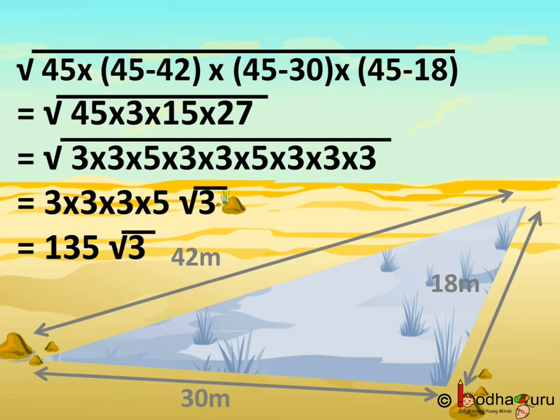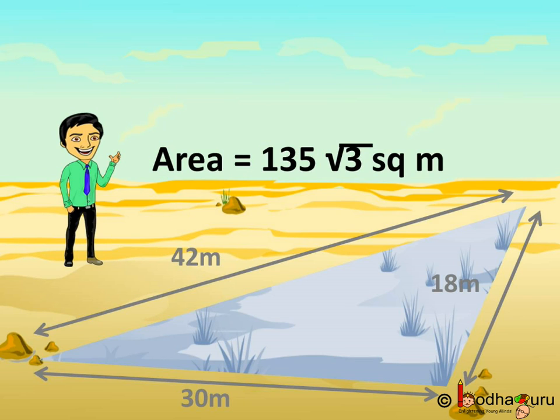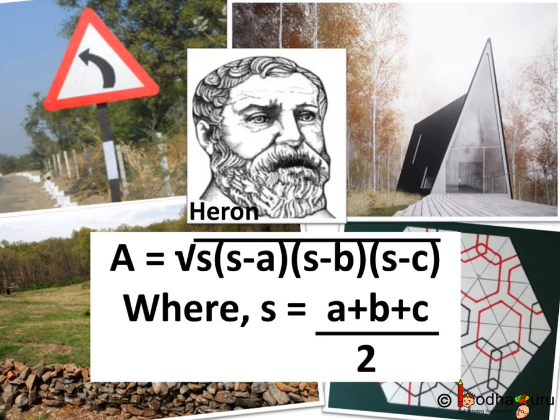So, using Heron's formula, we calculated the area of this triangle as 135 square root of 3 square meters. So, remember this is Heron's formula. Area of given triangle denoted by A here is the square root of S multiplied by S minus A multiplied by S minus B multiplied by S minus C, where S is the semi-perimeter. That is half the perimeter of a given triangle, where A, B, C are the lengths of the three sides of the triangle. We will see more usage of Heron's formula in the next video.